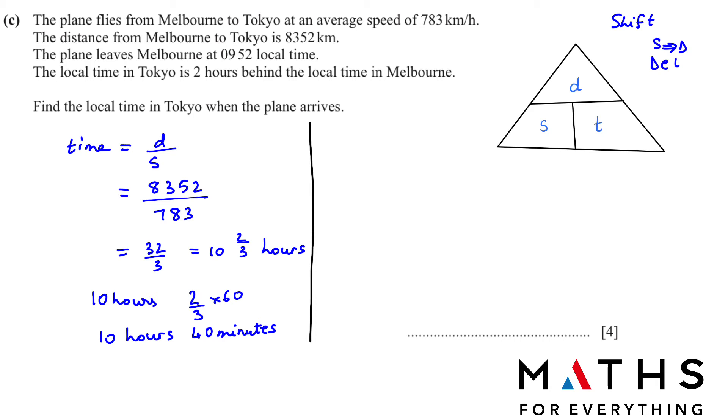So the plane leaves Melbourne at 9:52 and it takes 10 hours and 40 minutes. This also I will show you to do in the calculator, but first I'm showing you manually. So we add it. We get 19:92. We have to change into hours and minutes. You know in an hour there are 60 minutes, and there is 92 here. So if I subtract from here 60, I will get 32. And that 60 I will add to 19 to make it into hours. So now I have 20 hours 32. This is from Melbourne time. But Tokyo is 2 hours behind, so we subtract 2. And that will give us 18 hours 32. That is our answer.